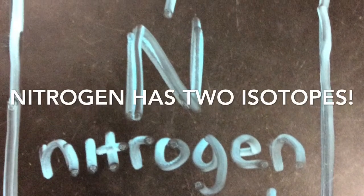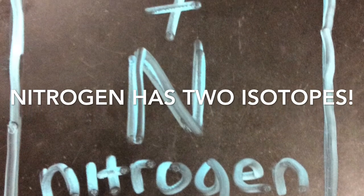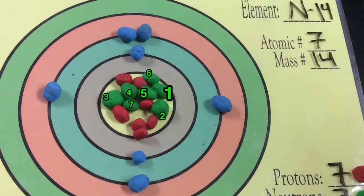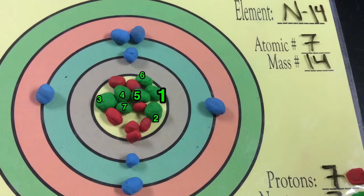N14 and N15! These isotopes are both stable. One of the isotopes of nitrogen is N14.